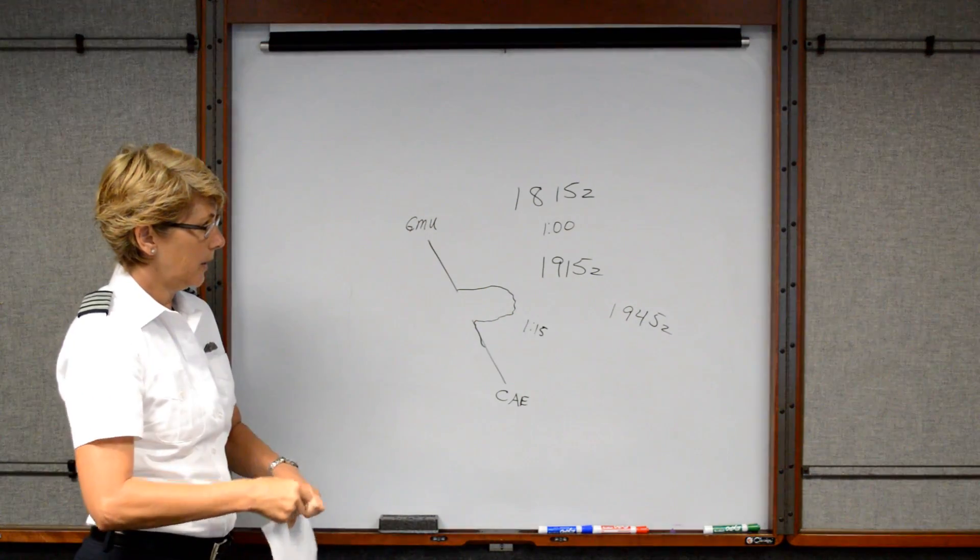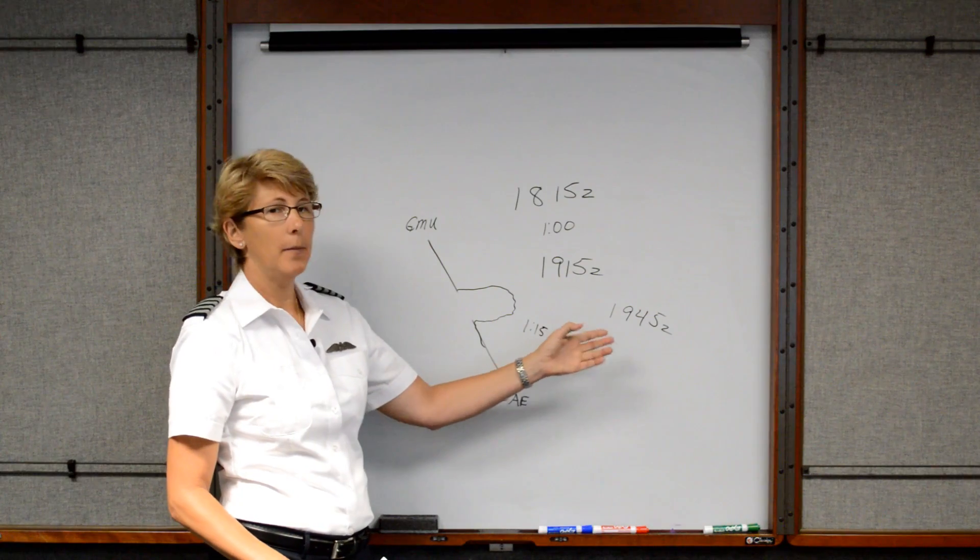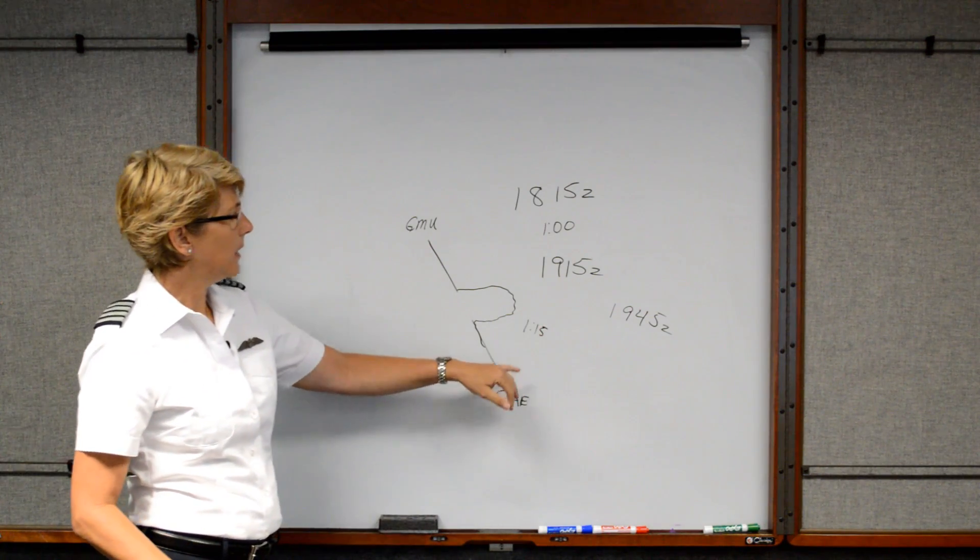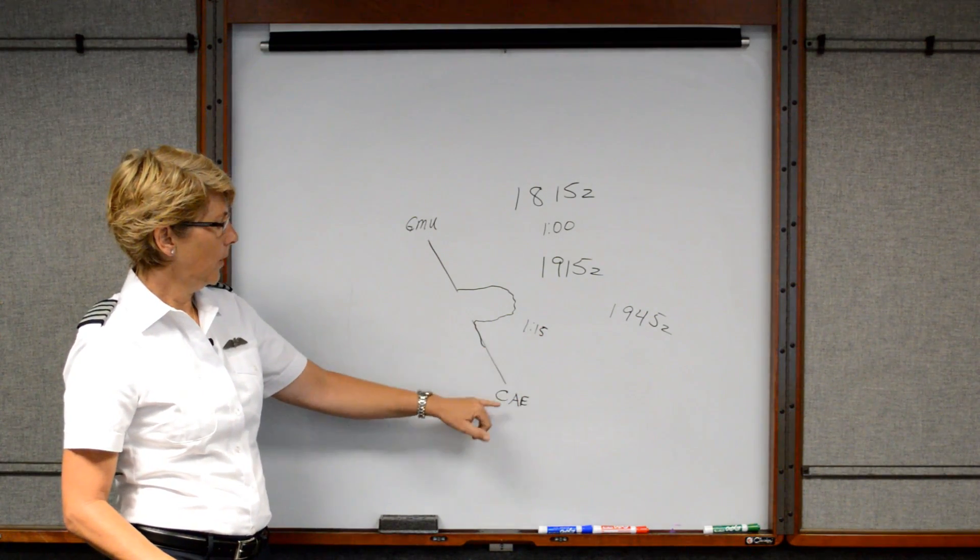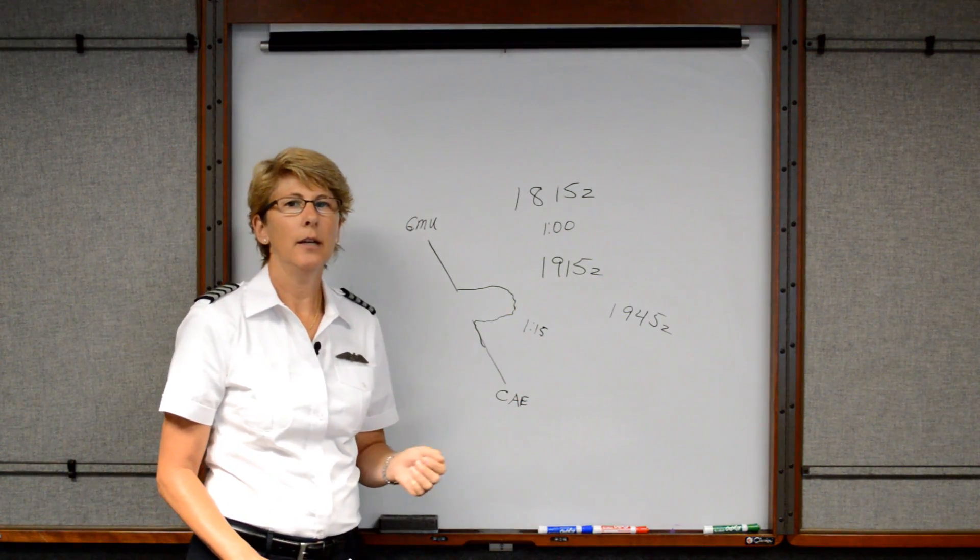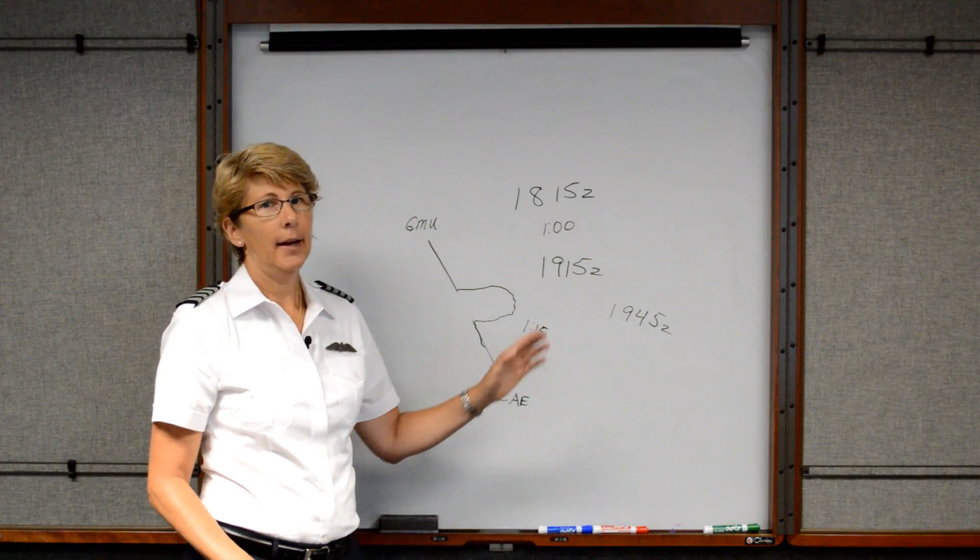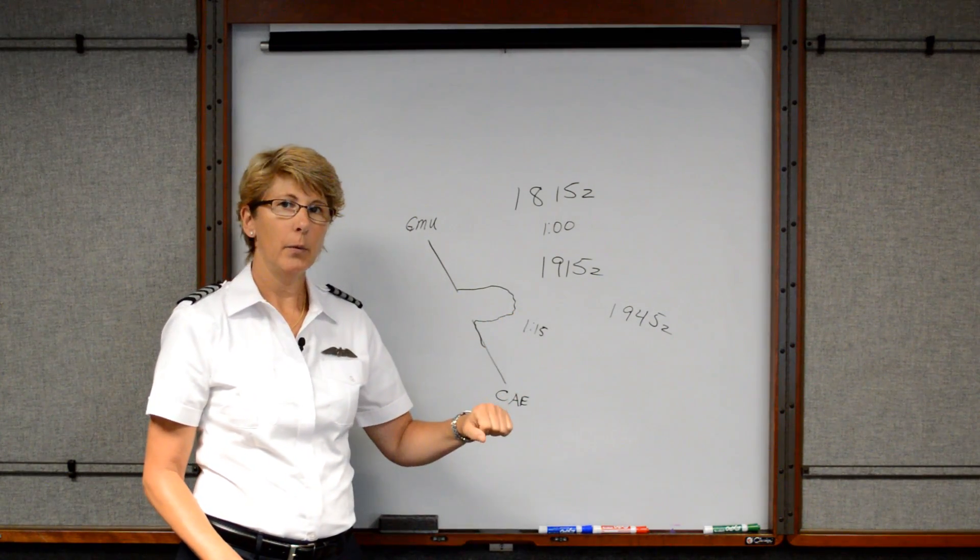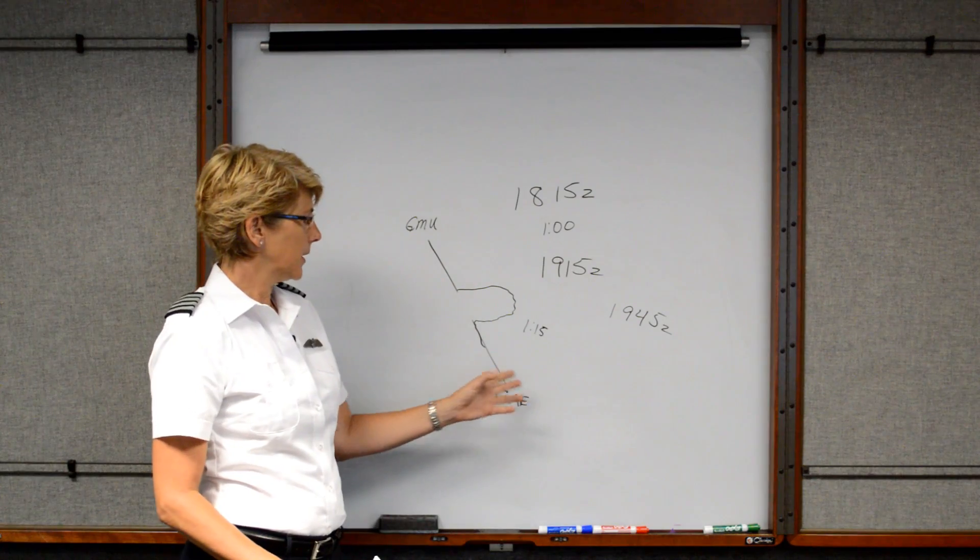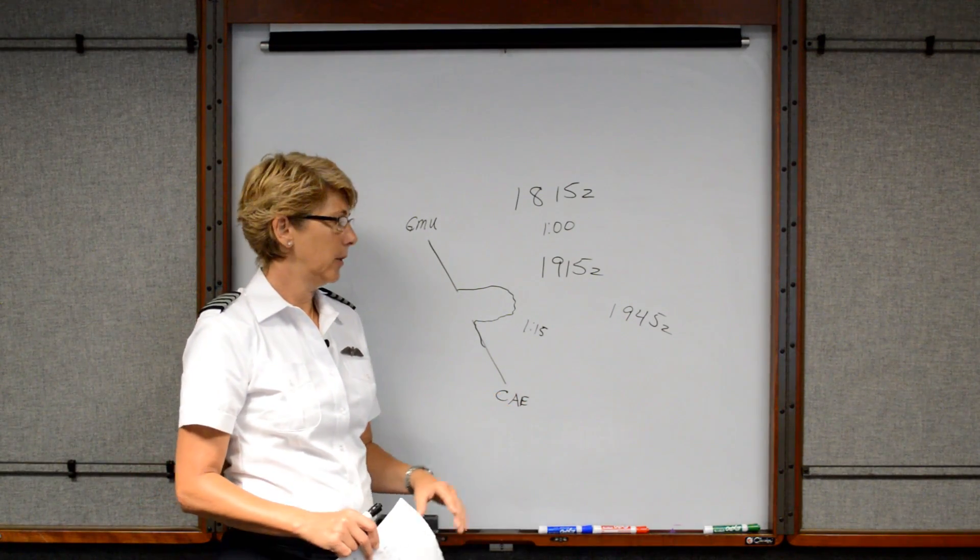They're not going to start looking for you quite yet. They're not going to activate search and rescue because it's not been 30 minutes past, but they may call Columbia approach or Greer approach and ask, hey, have you seen November 870 Sierra Papa? They were due to arrive at 1915 in Columbia and we haven't heard from them yet. They may say, oh yes, we see them on short final now. So then they know that you're fine.